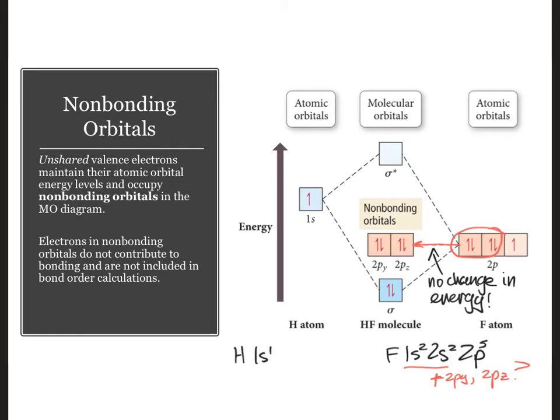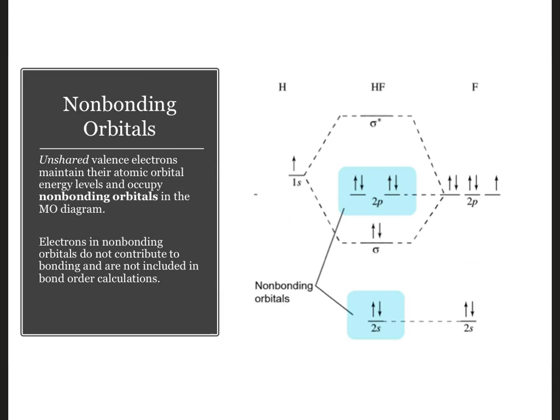These non-bonding orbitals in the MO diagram do not contribute to the bonding and are not included in the bond order calculations. In fact, if we were to zoom out and consider the complete MO diagram for HF, we'd see the 2s atomic orbital on fluorine is also non-bonding.